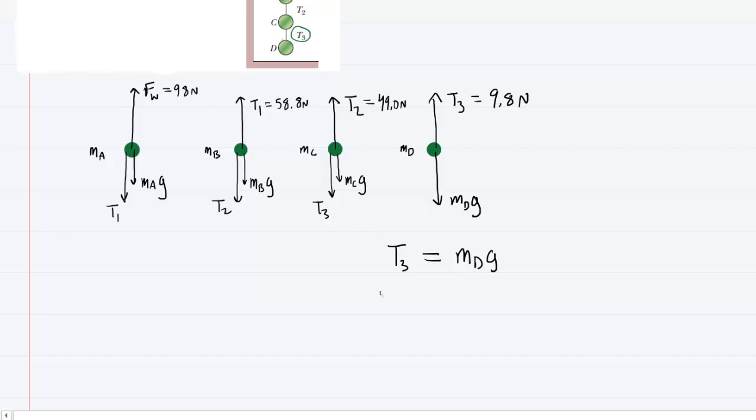And we'll fill in the known values. We know T3 was given as 9.8 Newtons. We don't know the mass of disk D yet, and then multiplied by G, which is 9.8 meters per second squared. So it's very easy now to solve for the mass of disk D. You just simply divide both sides of the equation by the 9.8 meters per second squared.